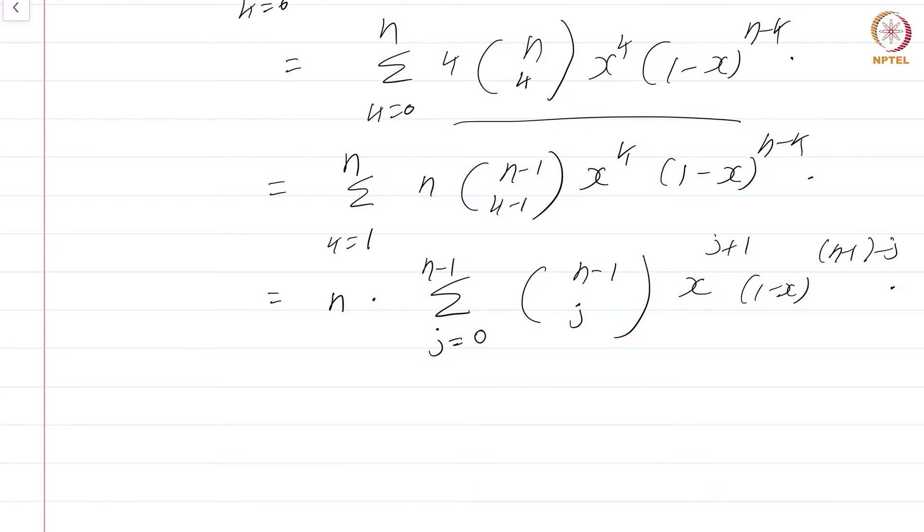Now, look at this quantity: summation j equals 0 to n minus 1 of n minus 1 choose j, x power j times 1 minus x power n minus 1 minus j. What you do to this is, we write this as equal to n times x times summation j equals 0 to n minus 1 of n minus 1 choose j, x power j times 1 minus x power n minus 1 minus j.